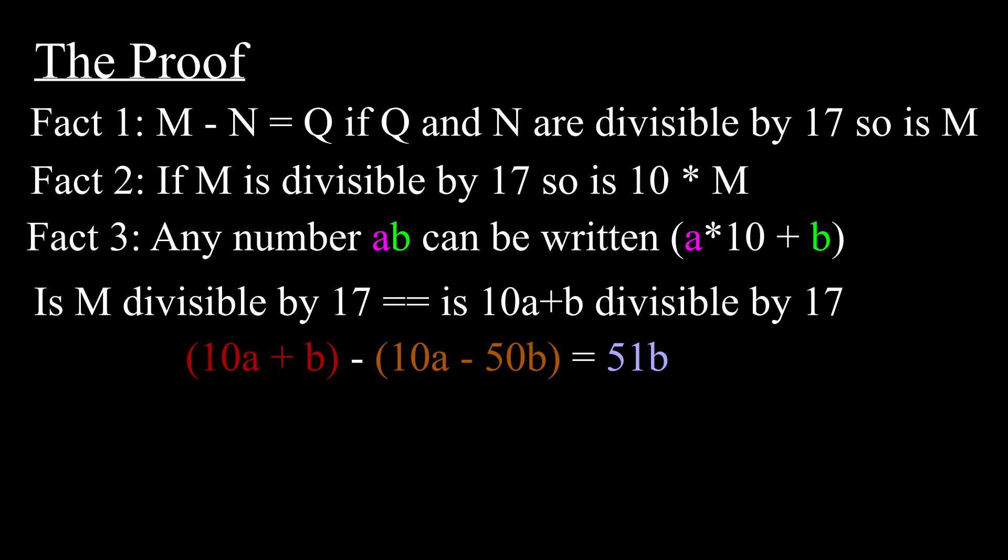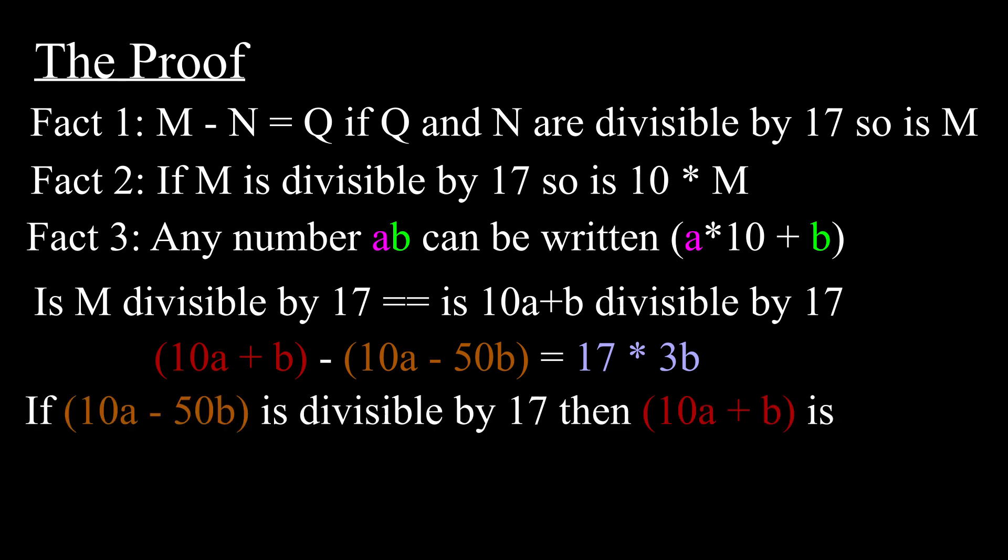We can then write the following true equation. Notice that the right side of the equation is divisible by 17 because 51 is divisible by 17. Thus, by fact 1, if one of the subtrahends is divisible by 17, then both are.